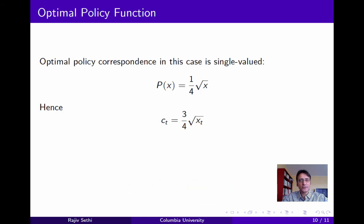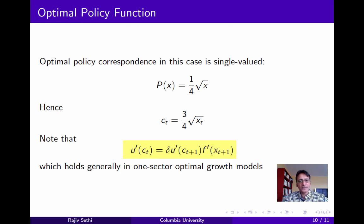Now let's consider the optimal policy correspondence, which we defined in the previous segment. And we find that in this case it's single valued, so we have an optimal policy function. Given the level of capital x at the start of the current period, our output will be the square root of x, and we want to leave one-fourth of this for the next period and consume three-quarters of it today. Now you should verify that at the optimal solution, the equation shown on the slide is satisfied.